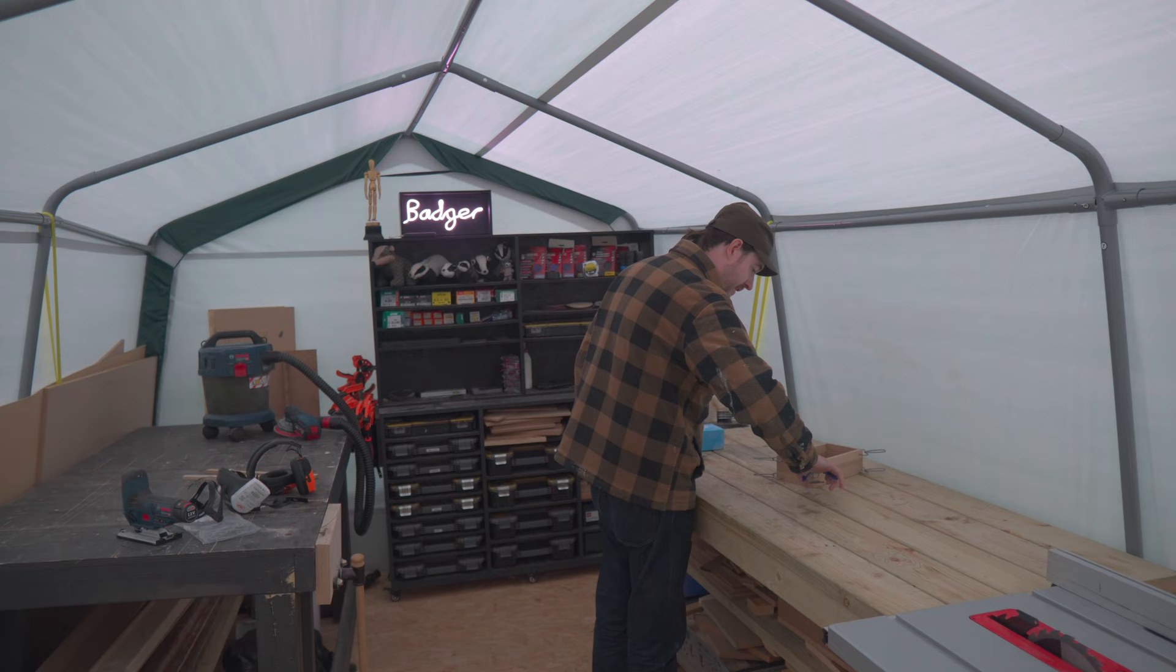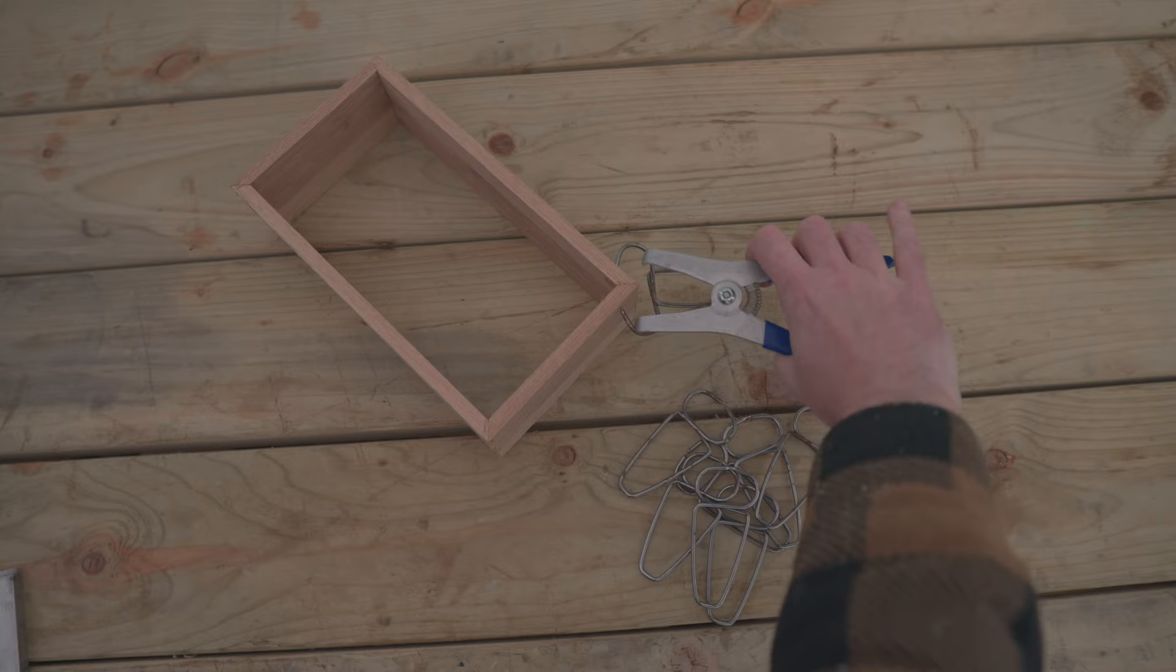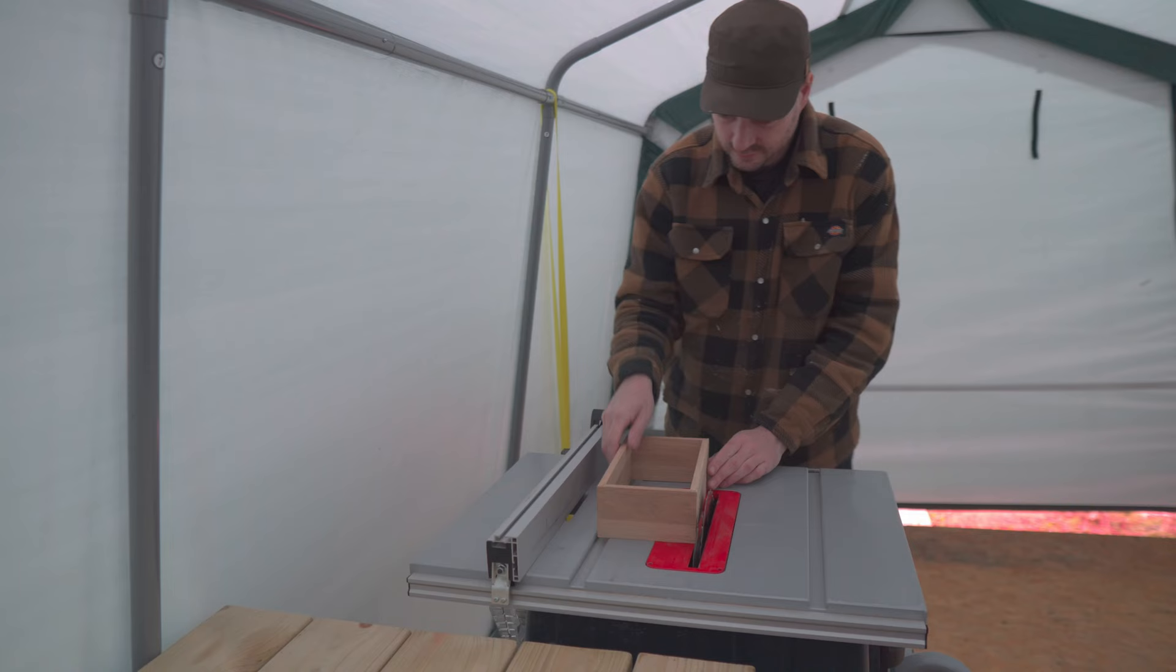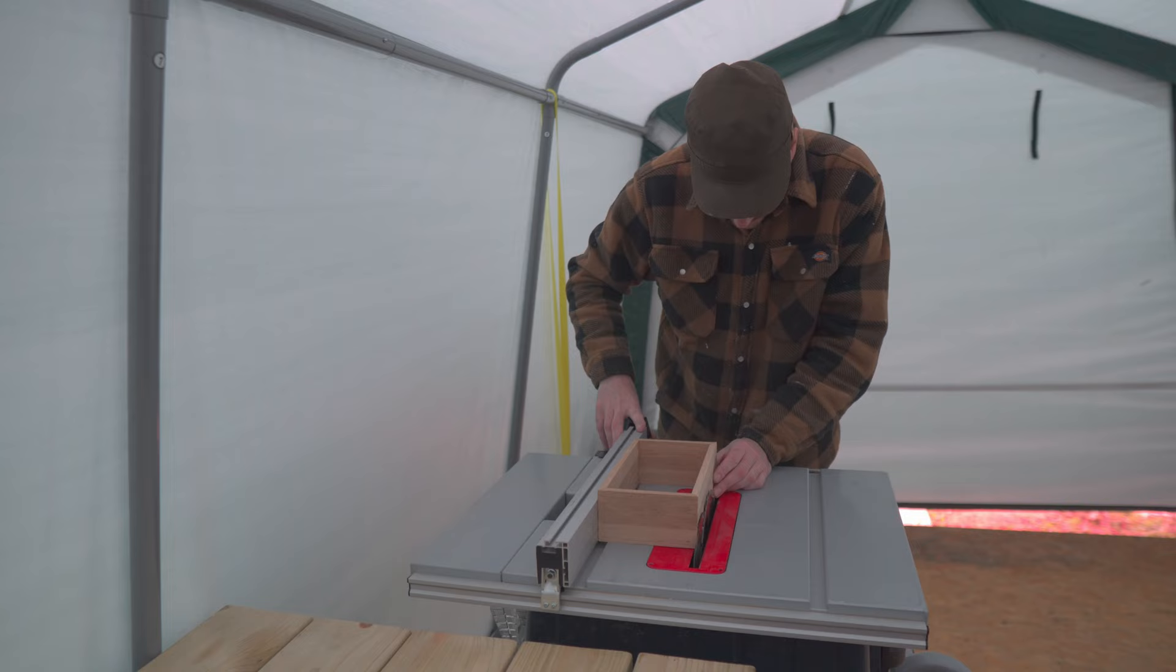I leave the whole thing to dry for a few hours, then I can get all the clamps off. Now I need to make the top for it. So, I get the box on the saw, and again, I'm just moving the fence over so it's slightly bigger than the box.